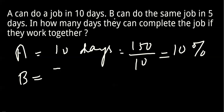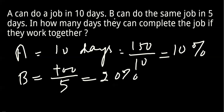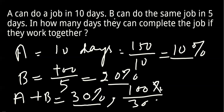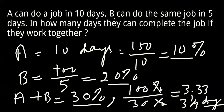B's efficiency is 100 divided by 5, which equals 20%. The combined efficiency of A and B is 20 plus 10, equal to 30% per day. To find how many days they take to complete 100% of the job, we divide 100% by 30%, giving 3.33 days, or 3 and one-third days.